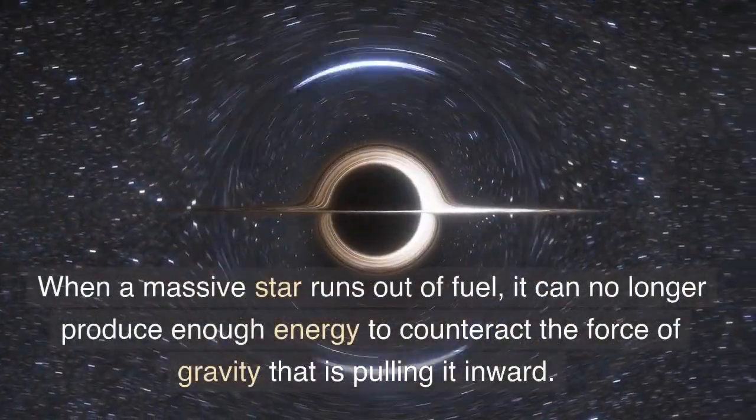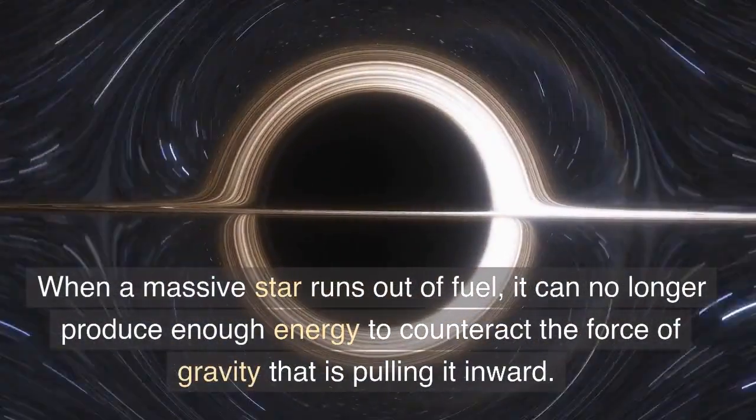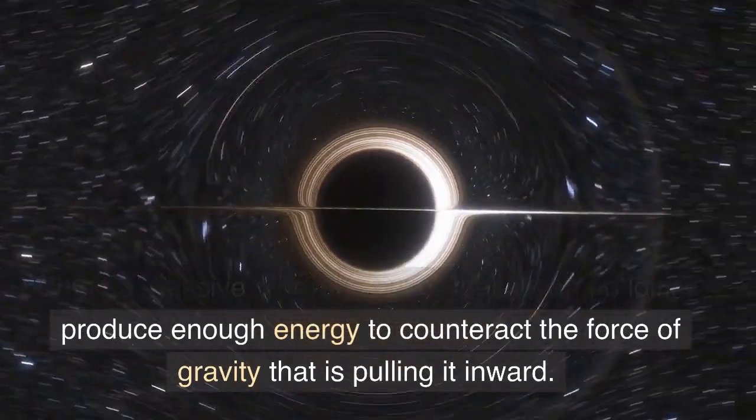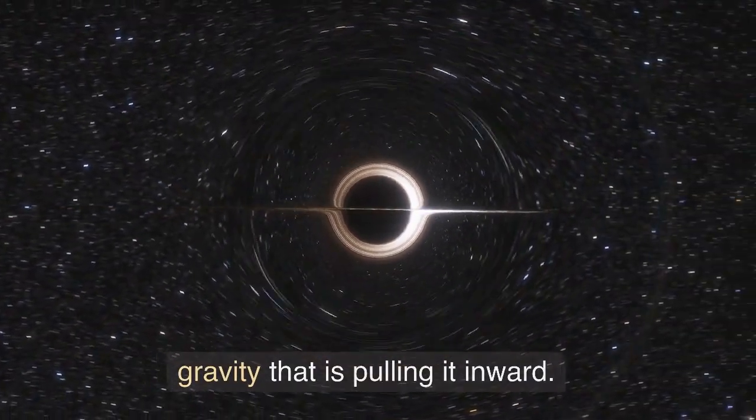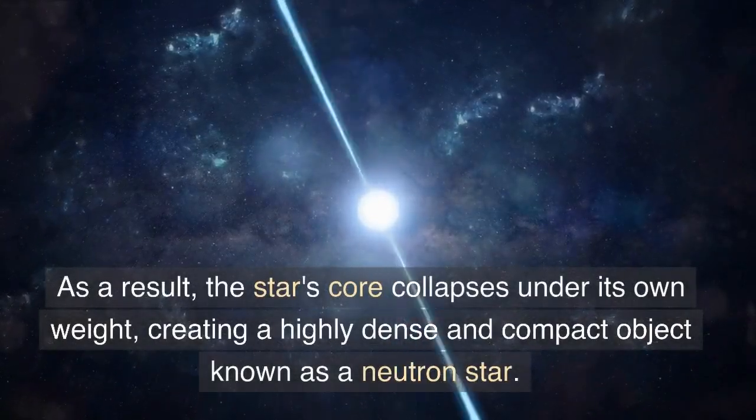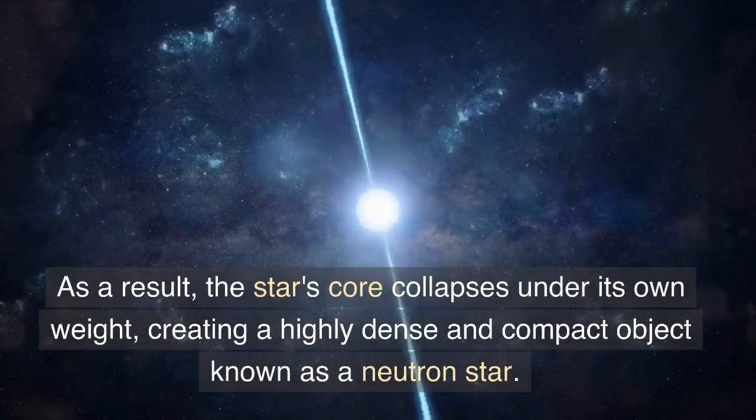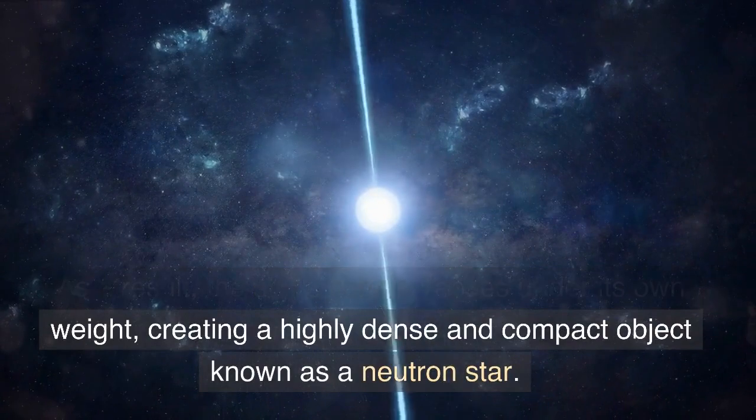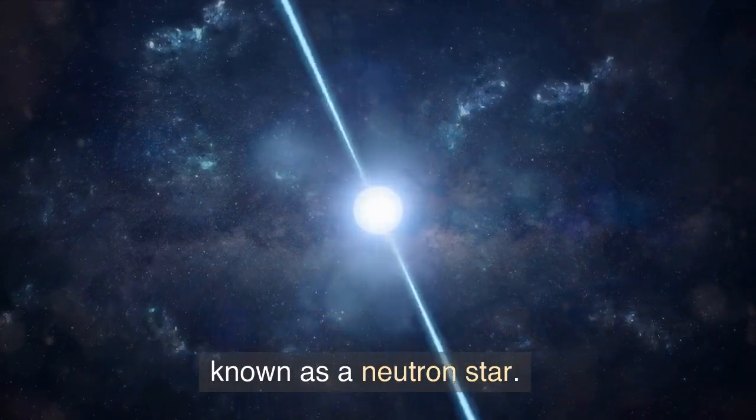When a massive star runs out of fuel, it can no longer produce enough energy to counteract the force of gravity that is pulling it inward. As a result, the star's core collapses under its own weight, creating a highly dense and compact object known as a neutron star.